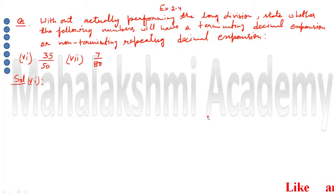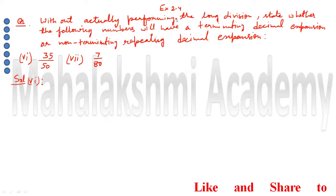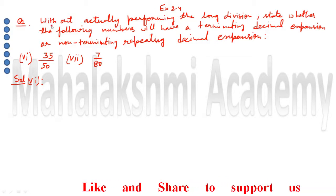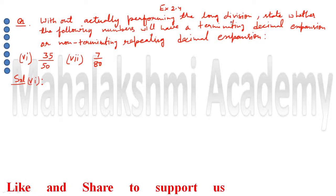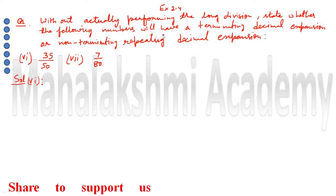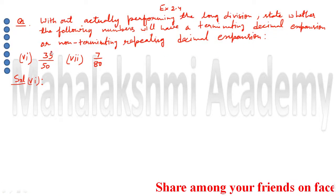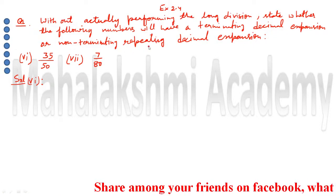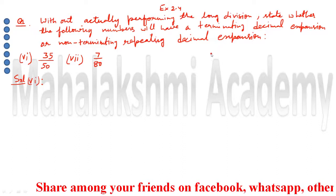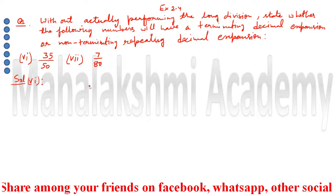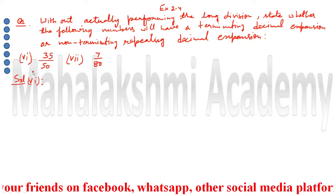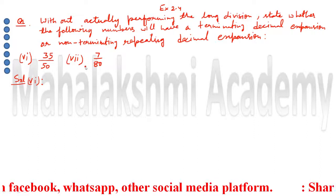Hello everyone. I am going to explain question number 1 from Exercise 2.4. The question is: without actually performing the long division, state whether the following numbers will have a terminating decimal expansion or non-terminating repeating decimal expansion. Today I am going to solve two parts, that is the 6th and 7th part.